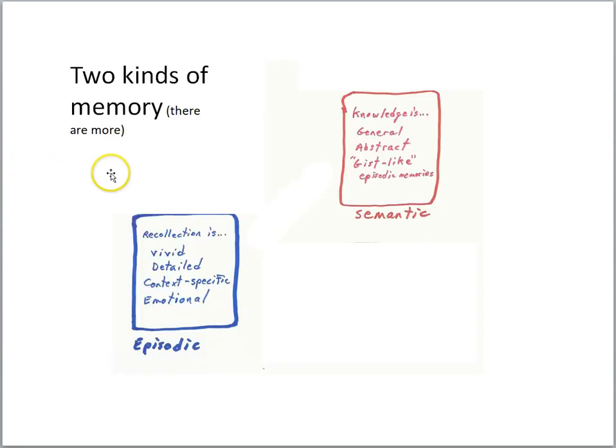Now we'll begin by looking at two different kinds of memory: episodic memory and semantic memory. Episodic memories are vivid, detailed, context specific, and possibly emotional. These are memories of important events in our lives that we can retrieve.